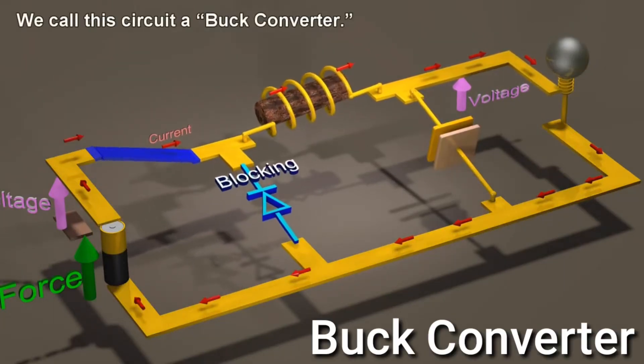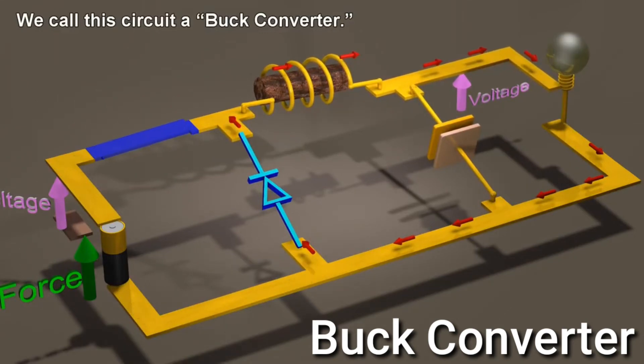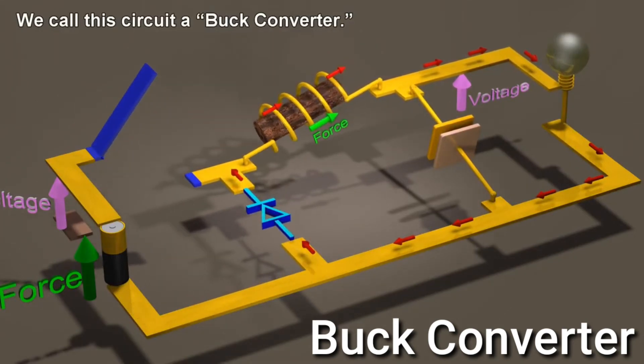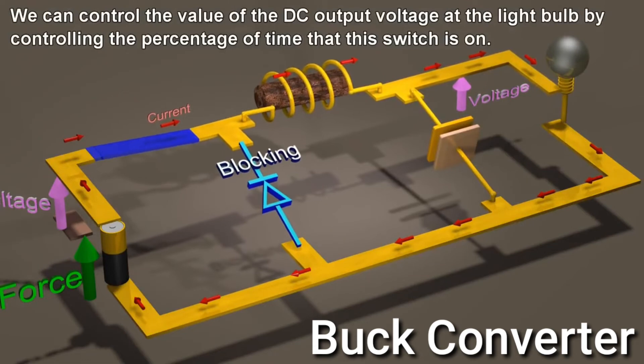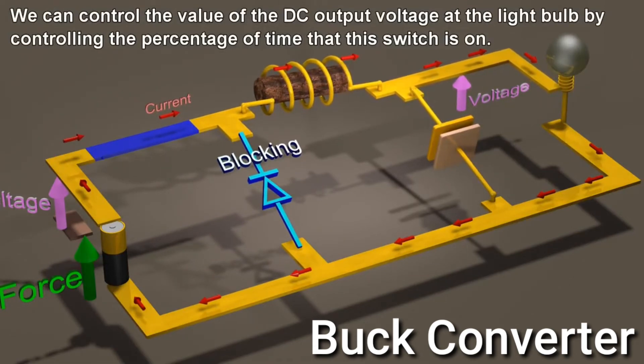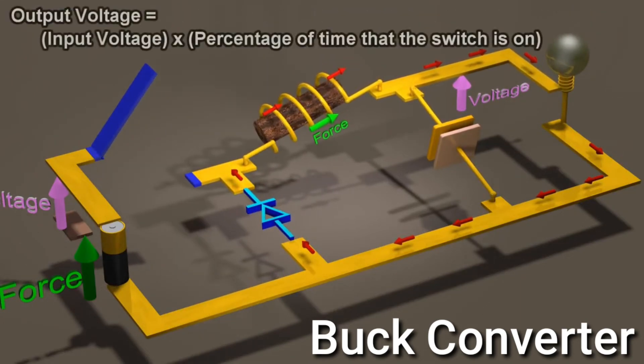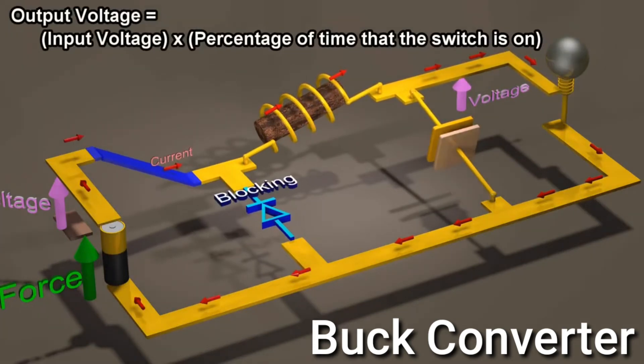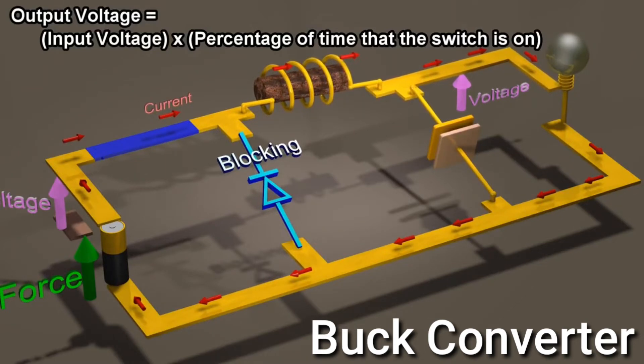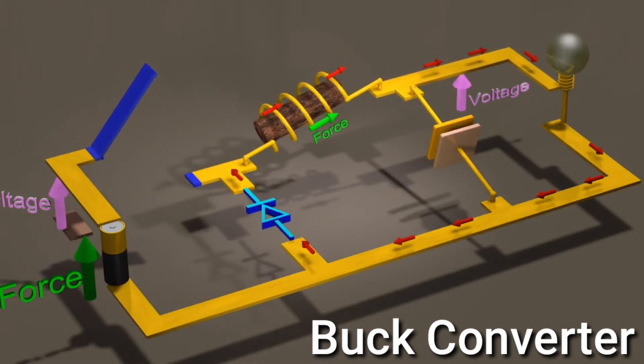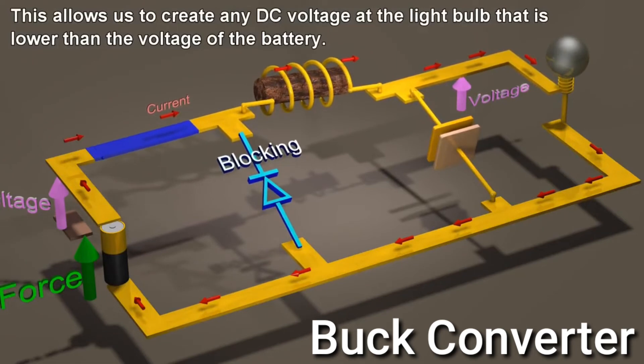We call this circuit a buck converter. We can control the value of the DC output voltage at the light bulb by controlling the percentage of time that the switch is on. This allows us to create any DC voltage at the light bulb that is lower than the voltage of the battery.